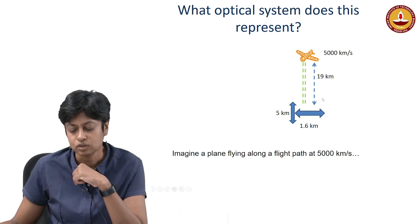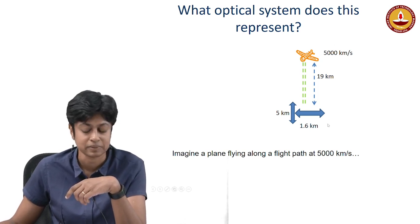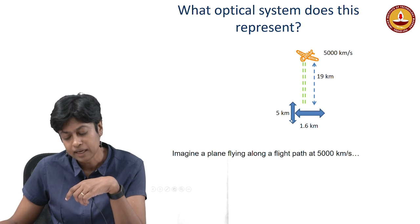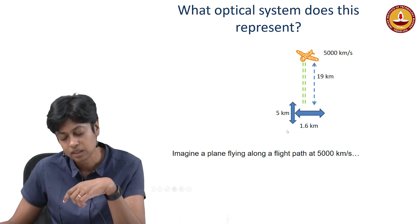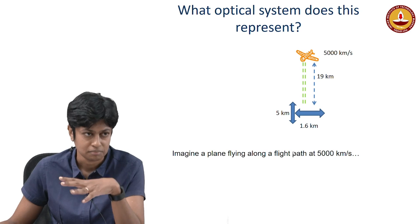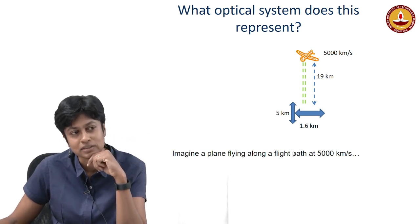I have an optical system here that I am representing through an analogy. In the analogy, something is moving at a fairly high velocity and it has to move very accurately. In my analogy I am calling that an aeroplane — it is moving with a velocity of 5000 kilometers per second. I have given numbers for the height above the ground, and the blue arrows — 1.6 kilometers horizontal and 5 kilometers vertical — indicate the accuracy with which it has to maintain this height. Can you tell me what you think this optical system is?